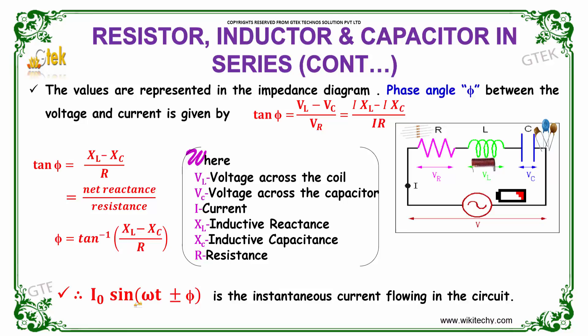Finally, I naught sin omega t plus phi is the instantaneous current flowing in the circuit.